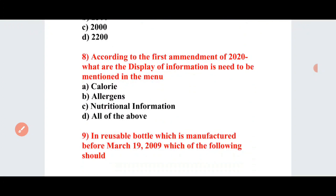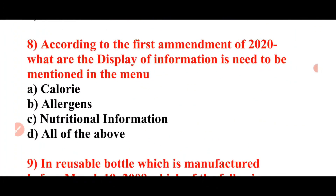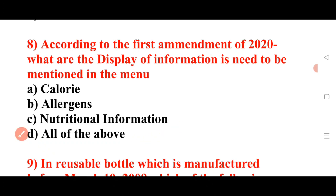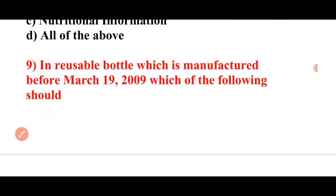Next question: According to the first amendment of 2020, what information is needed to be mentioned in the menu? Option A: calorie. Option B: allergens. Option C: nutritional information. Option D: all of the above. Answer: D is the correct answer — all of the above.